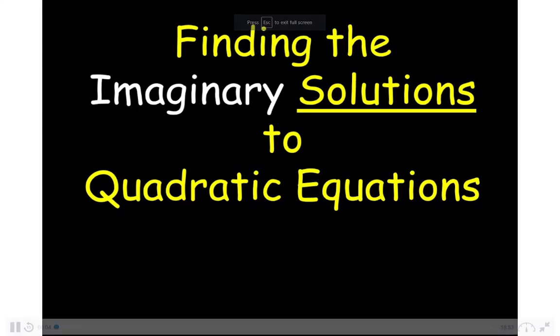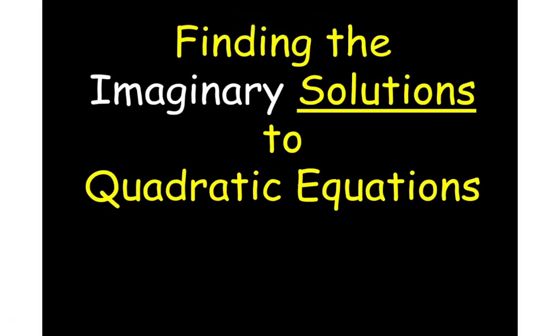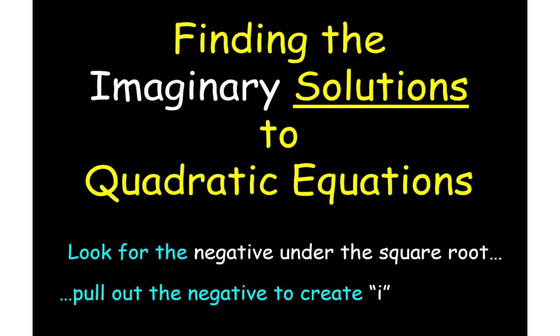You know why we're taking these last couple days talking about imaginary numbers — because they will become the solutions to certain quadratic equations. We're not going to do anything a whole lot differently. The only thing that's really going to happen is we're going to look for a negative under the square root, pull that negative out, and call it i. This is actually just a little more practice with solving quadratic equations.